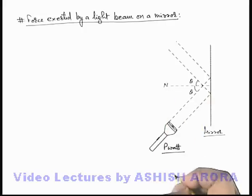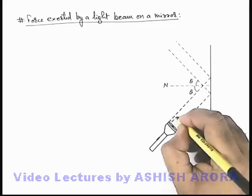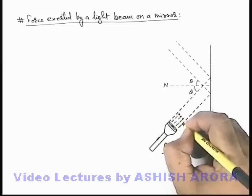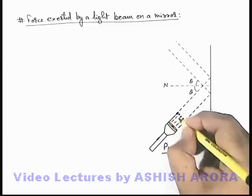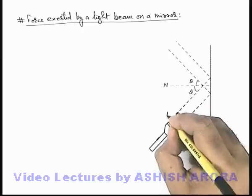The light hits at an angle theta to the normal to this mirror, and the power of this source of light is given as P watt. Now in this situation, if we calculate the momentum of all the photons per unit time which are traveling in this beam, say if it is delta P.